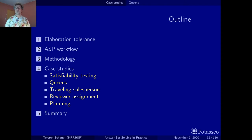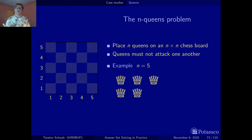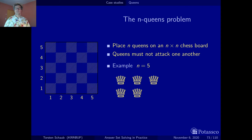Although I believe most of you are familiar with the N-Queens problem, let's briefly review it. The goal of the N-Queens puzzle is to place N queens on an N times N chessboard so that no two queens attack one another.